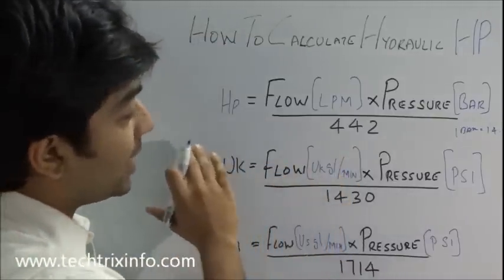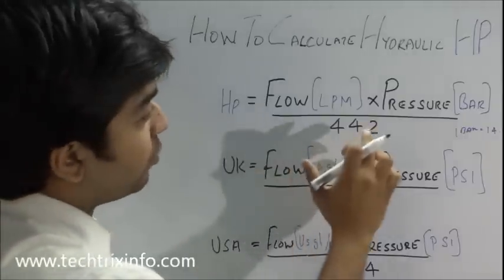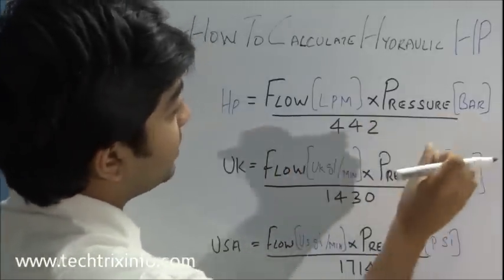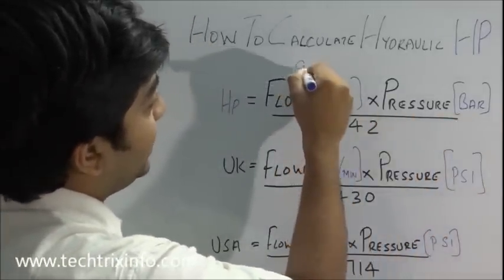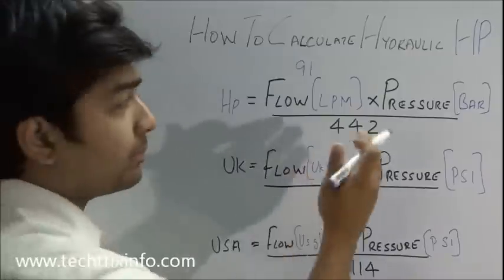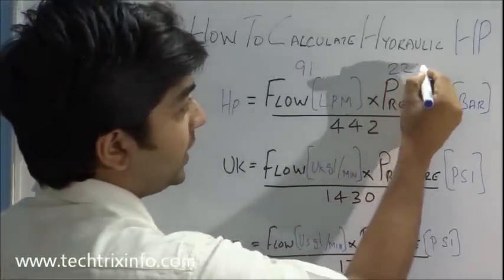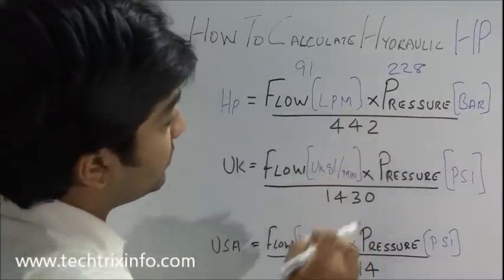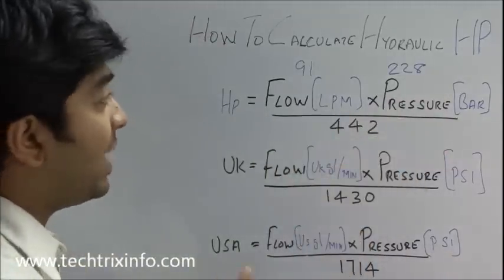So I take the flow as 91 LPM and I take the pressure as 228 bar. So with the constant 442 we get a value of HP as 46.94 HP.